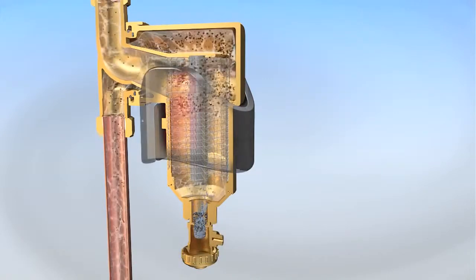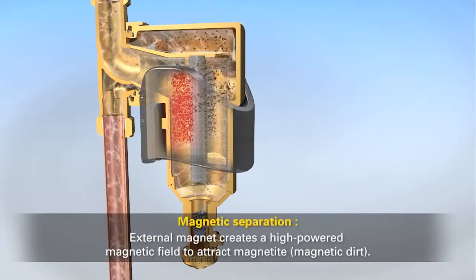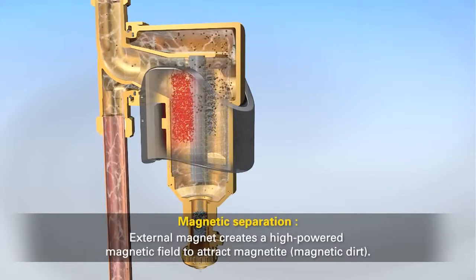Simultaneously, an external magnet creates a high-powered, internally-directed magnetic field that instantly attracts magnetic dirt, known as magnetite.